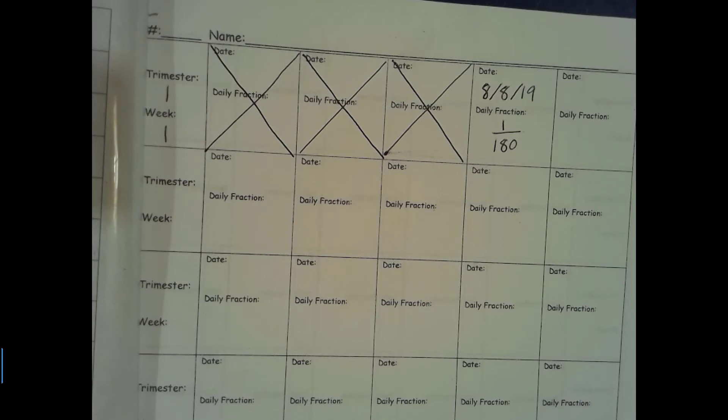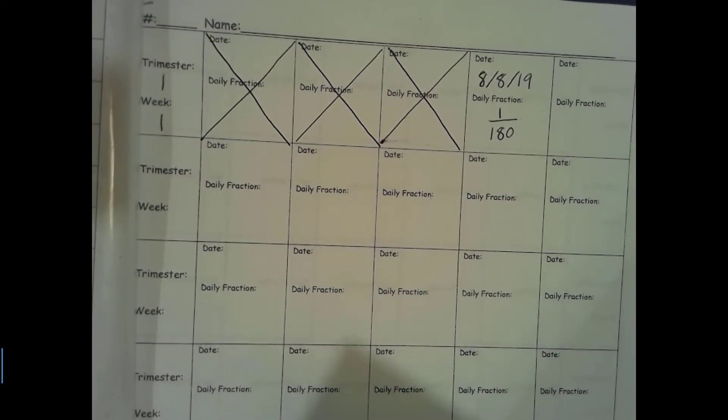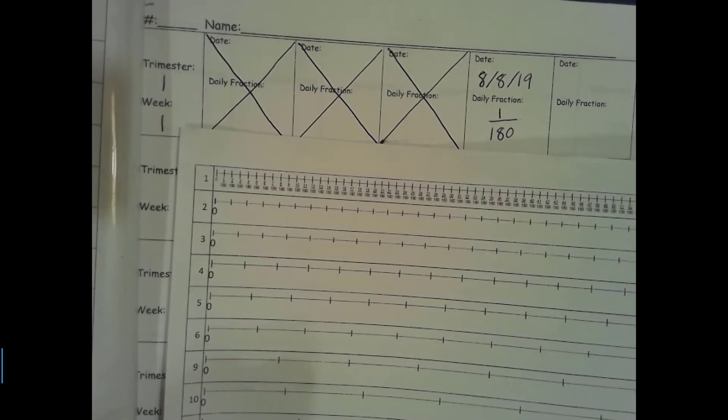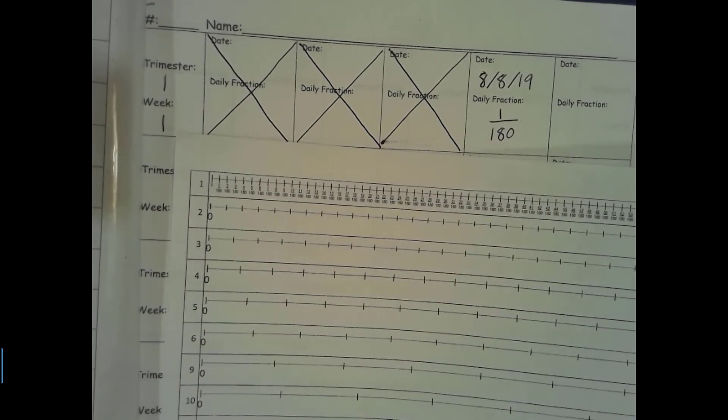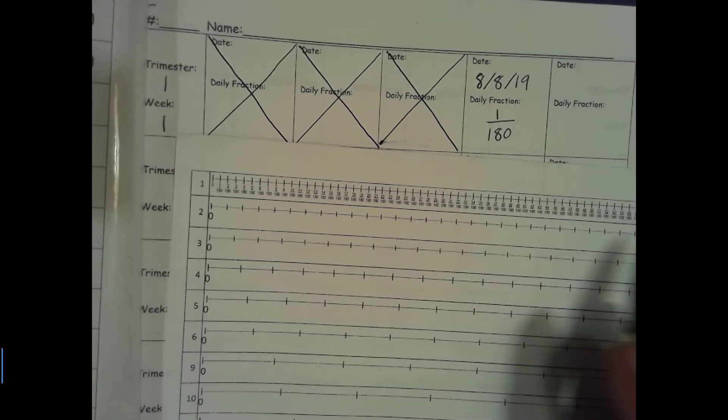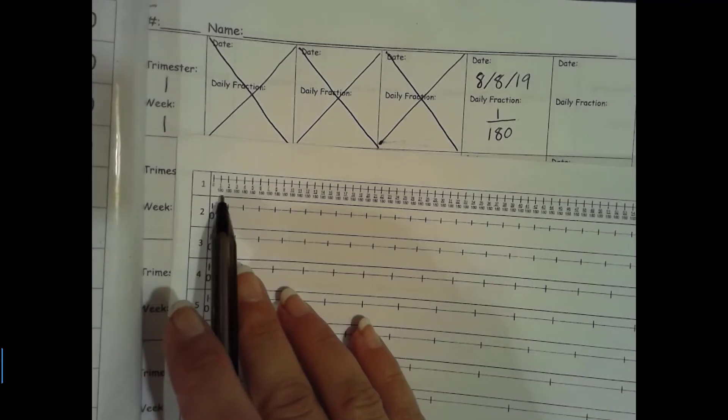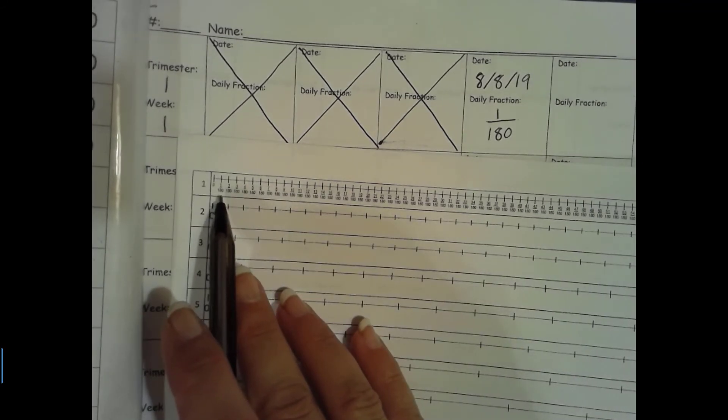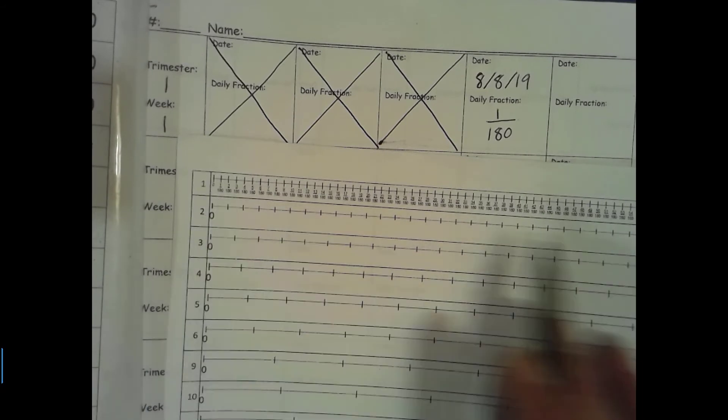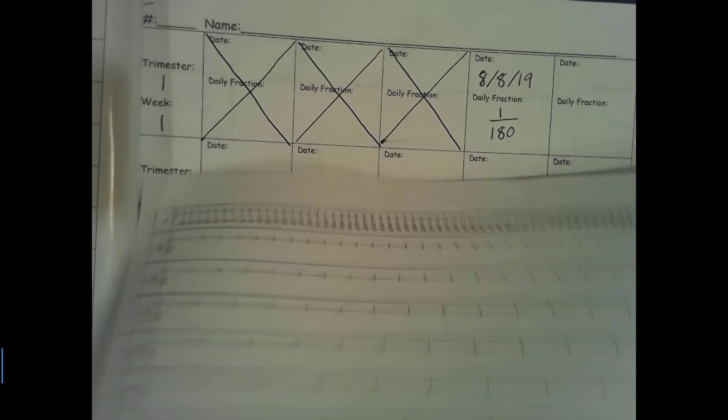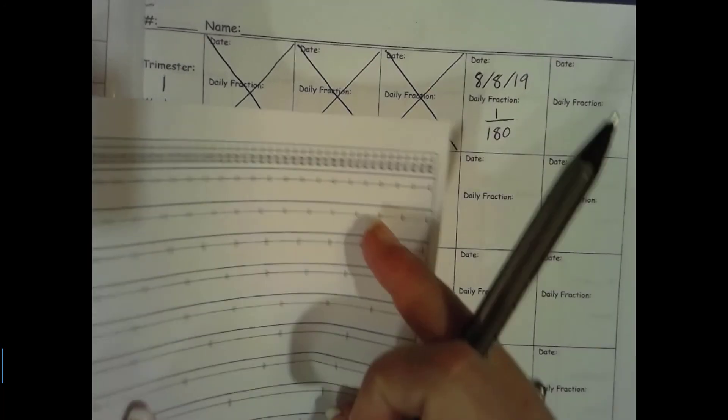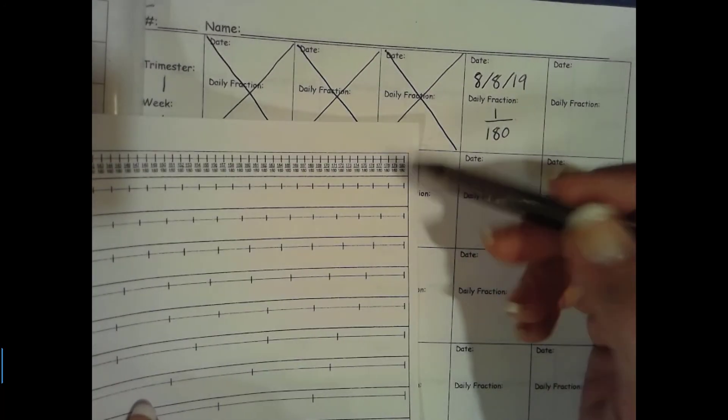And then next what we do is we get out our number line. So this is your number line or set of number lines. And the top row has all the numbers representing our 180 days. 1 out of 180 all the way to the very last one which is 180 out of 180.